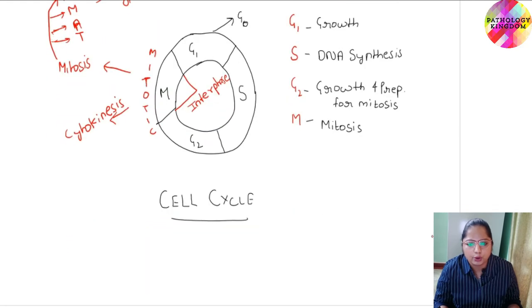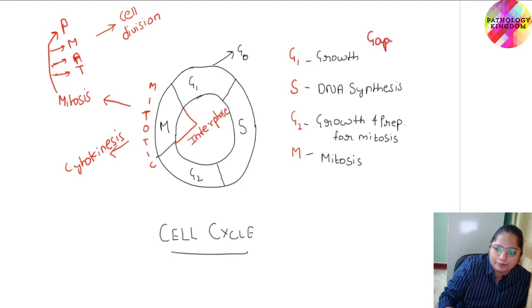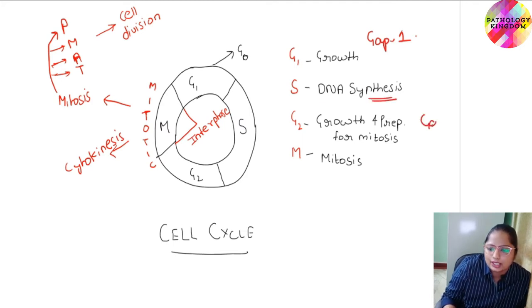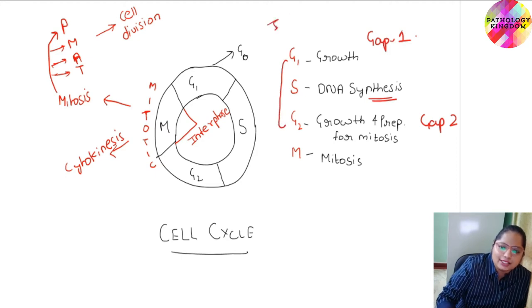Now coming on to the overview of cell cycle. Cell cycle consists of various phases: G1 known as gap 1, S phase known as synthesis phase, G2 gap phase 2, and M is mitotic phase. In G1 there is growth of cell. In S phase there is DNA synthesis. In G2 phase, growth and preparation for mitosis. And mitotic phase is characterized by mitosis and cytokinesis. G1 phase, S phase, and G2 are together known as interphase.